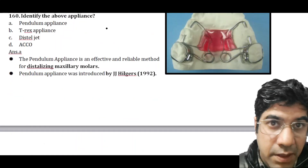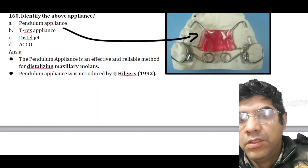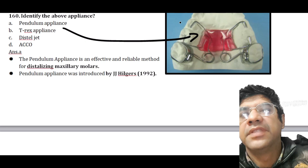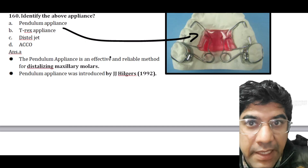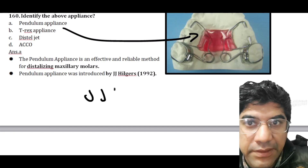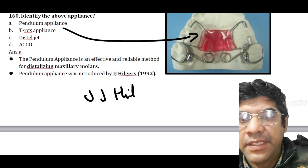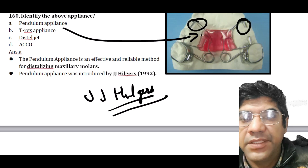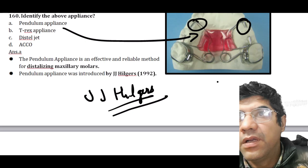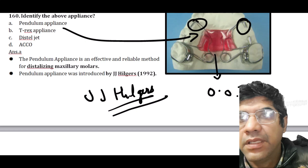Identify the above appliance — it is the pendulum appliance. The pendulum appliance is an orthodontic appliance used for distalization of the maxillary molars, introduced by JJ Hilgers. It consists of bands on the first premolars and a soldered palatal extension made of 0.036 stainless steel wire.